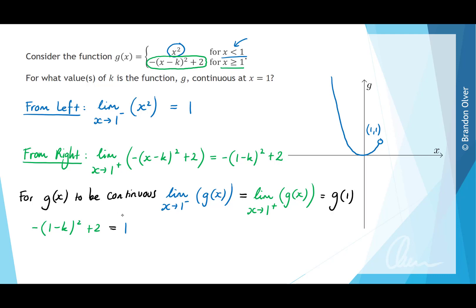If we subtract 2 from both sides and multiply through by negative 1, we find that 1 minus k all squared equals 1. Therefore 1 minus k equals plus or minus the square root of 1. Solving for k gives k equals 0 or k equals 2.